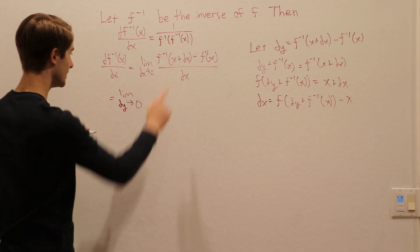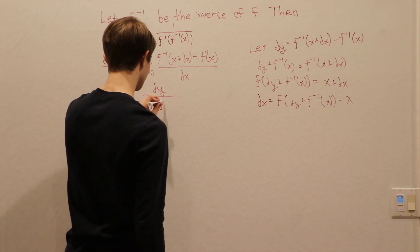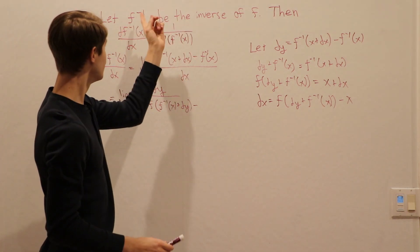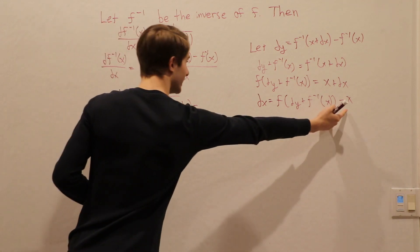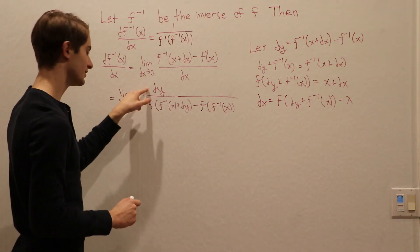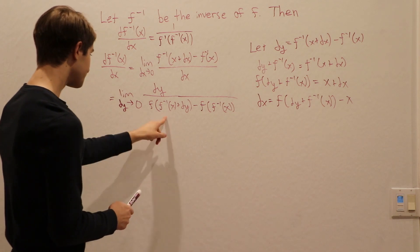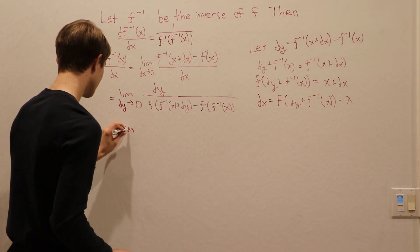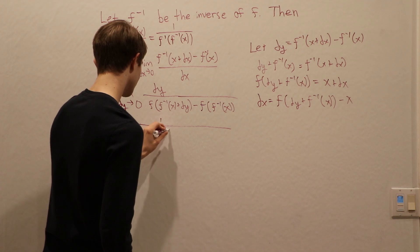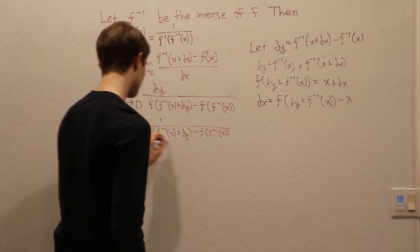So dy goes to 0. On the top we have dy, and on the bottom we plug in dx as f of f inverse of x plus dy, minus x. Since f inverse is the inverse function, we can write x as f of f inverse of x. Because we normally want the differential on the bottom when taking derivatives, we rewrite this as the limit as dy approaches 0 of 1 over: f of f inverse of x plus dy, minus f of f inverse of x, all divided by dy.